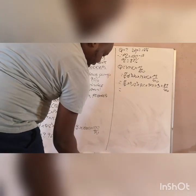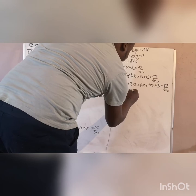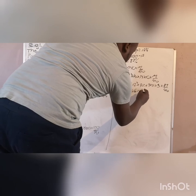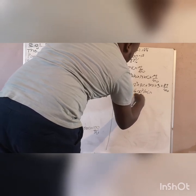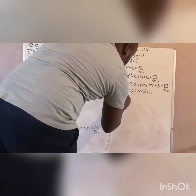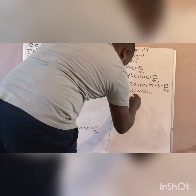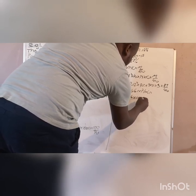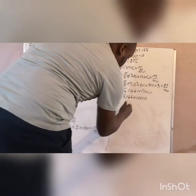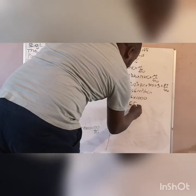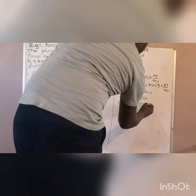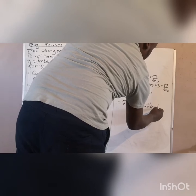That gives you 5.166 meters cubed per minute. Converting to liters by multiplying by 1000, you get 5,165.72 liters per minute.